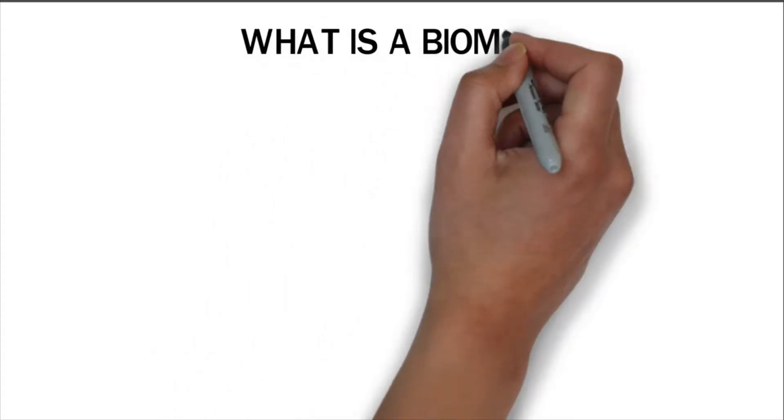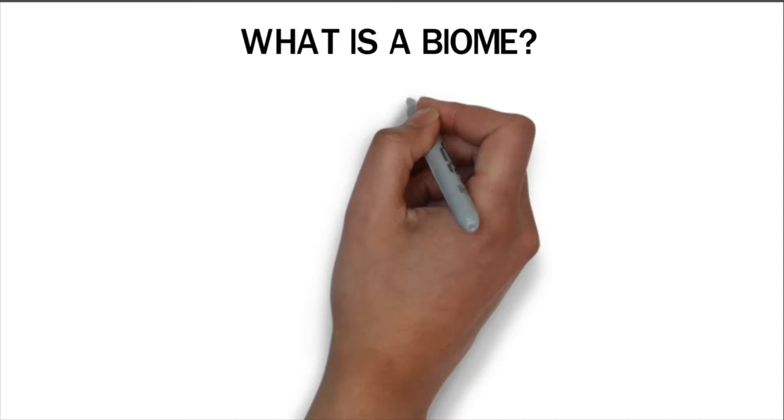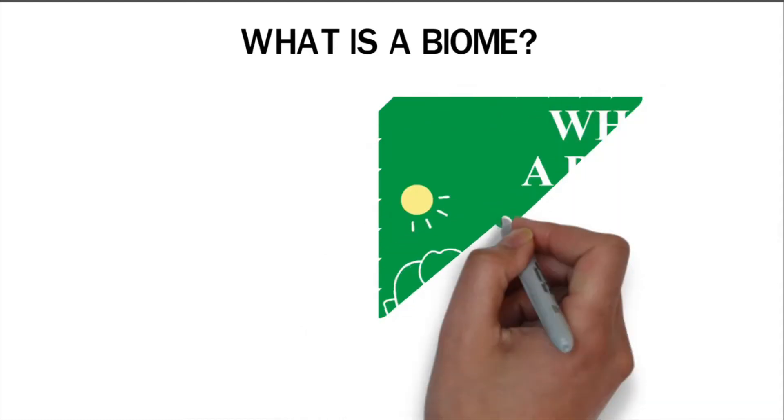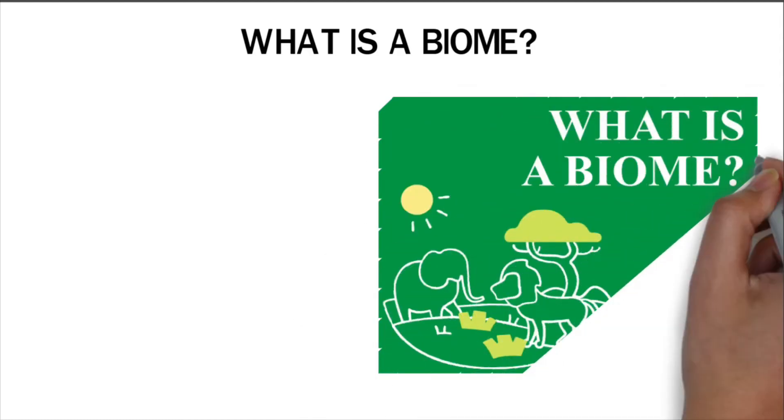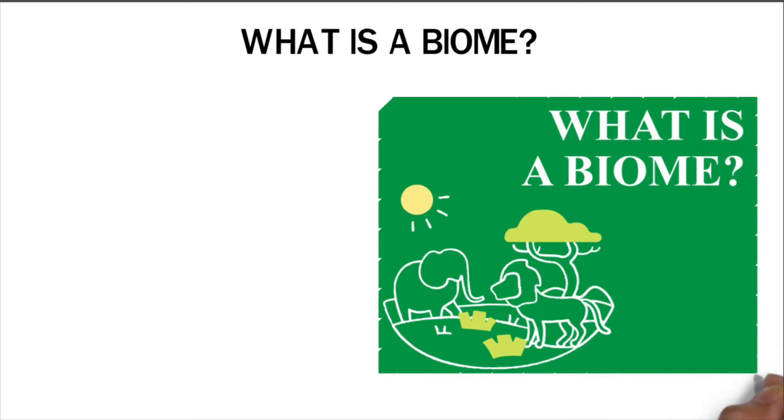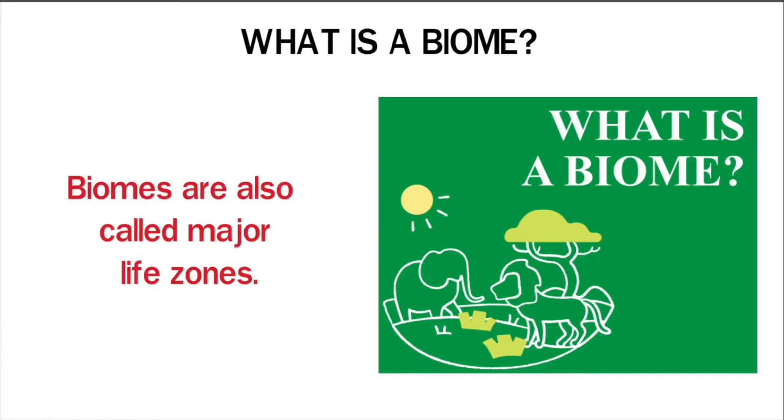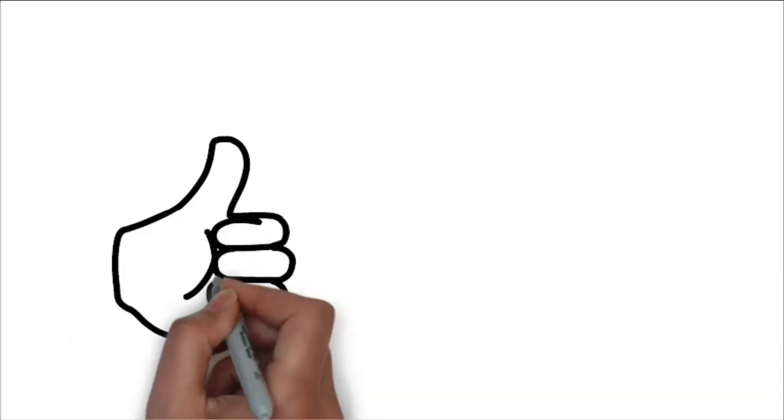What is a biome? A biome is a large geographic region characterized by the types of climate, animals, and plants found in that area. The organisms in a biome often have similar characteristics that allow them to survive and thrive in a given region. Biomes are also called major life zones.